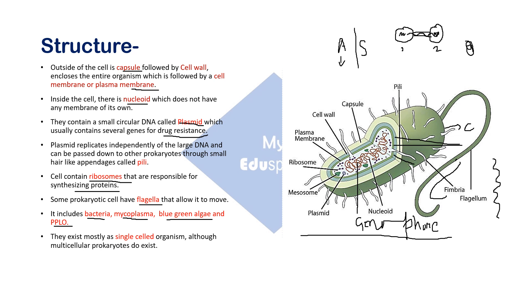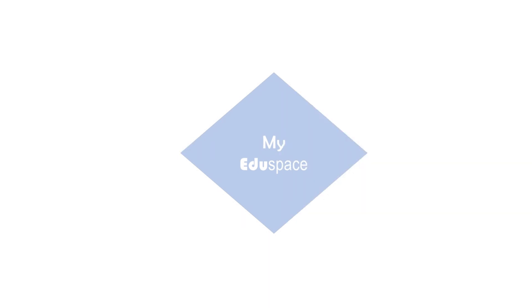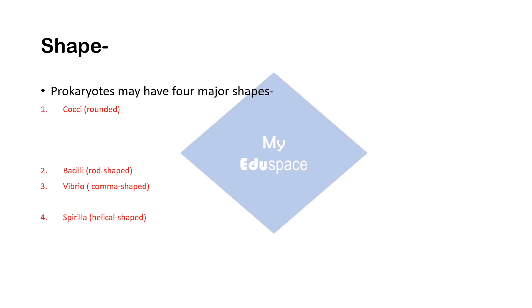Prokaryotes exist mostly as single-celled organisms, so we can say the body organization is unicellular. Although multicellular prokaryotes do exist — like cyanobacteria, which may form large colonies, and myxobacteria, which have multicellular stages in their life cycle. Prokaryotes are classified into four categories on the basis of their shapes: cocci, bacilli, vibrio, and spirula.